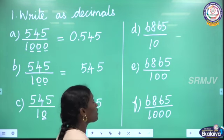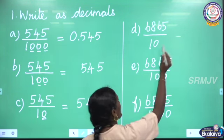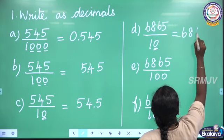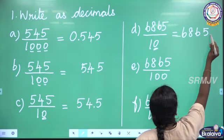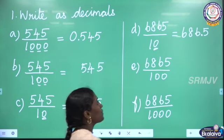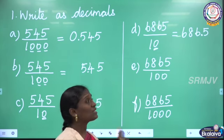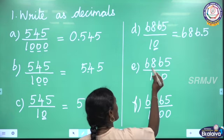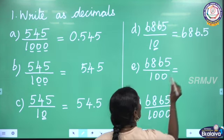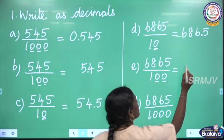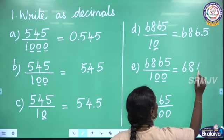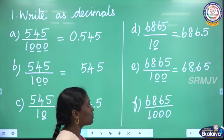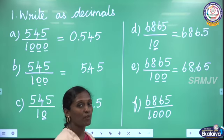The next one: 6865 divided by 10. Here 1 zero is there, so we need 1 decimal place. From the last before 1 digit we keep the decimal point, so the answer is 686.5. The next one: 6865 by 100. Here 2 zeros are there, so we need 2 decimal places. From the last before 2 digits we keep the decimal point. That is 68.65.